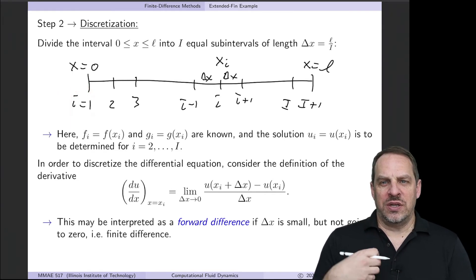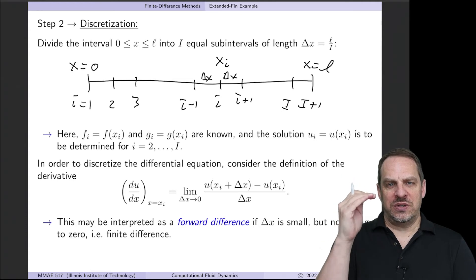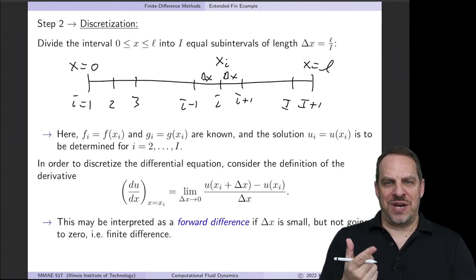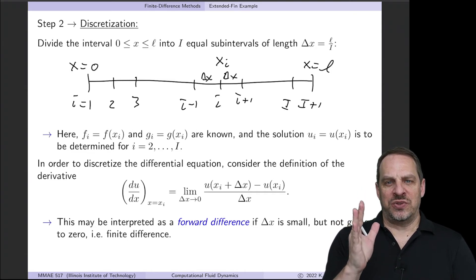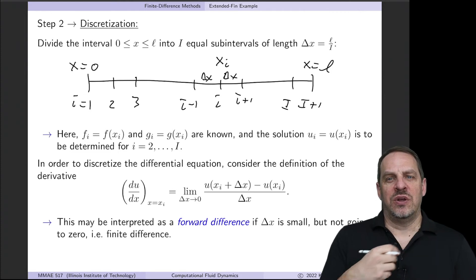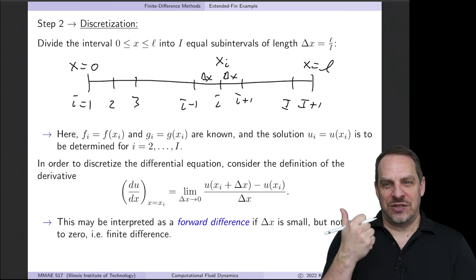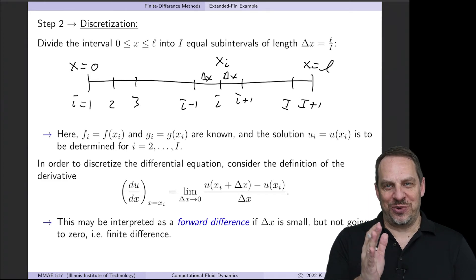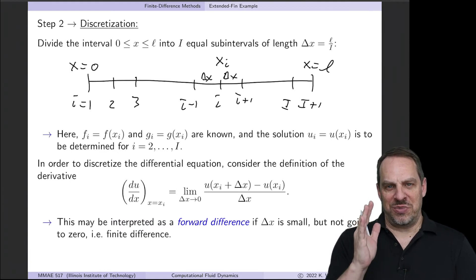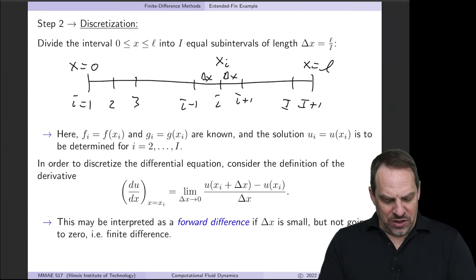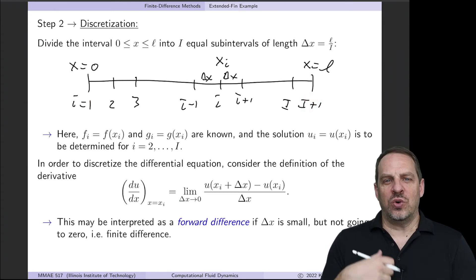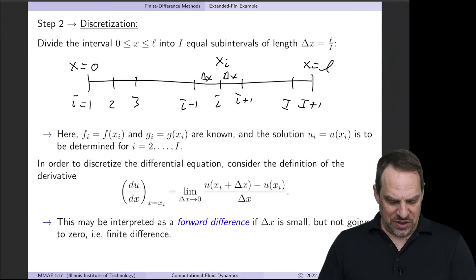In mathematics, the first element of a vector or matrix is typically indexed at 1. Mathematical programming languages like MATLAB, Mathematica, and Fortran default to starting arrays at 1, going from 1 to capital I+1. General-purpose languages like C and Python start at 0 by default. If you're using Python, you can either start at 0 and shift everything by 1, or specify your arrays to start at 1 and go to capital I+1 — either way is perfectly fine.